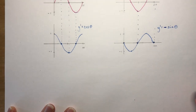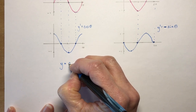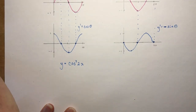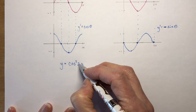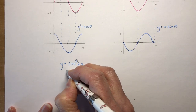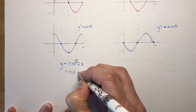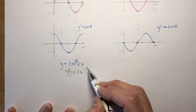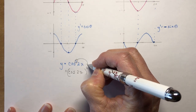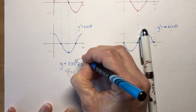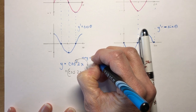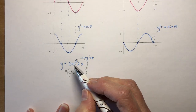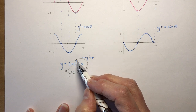Now another really important thing you need to know right away is that if I had something like y equals cos squared of 2x, you need to know that this 'squared' means everything squared. So I write it like this - cos of 2x, all squared. So it's the function with its angle that is squared. This is very, very important. If you've got this, then you'll be able to follow along with what we're going to do.